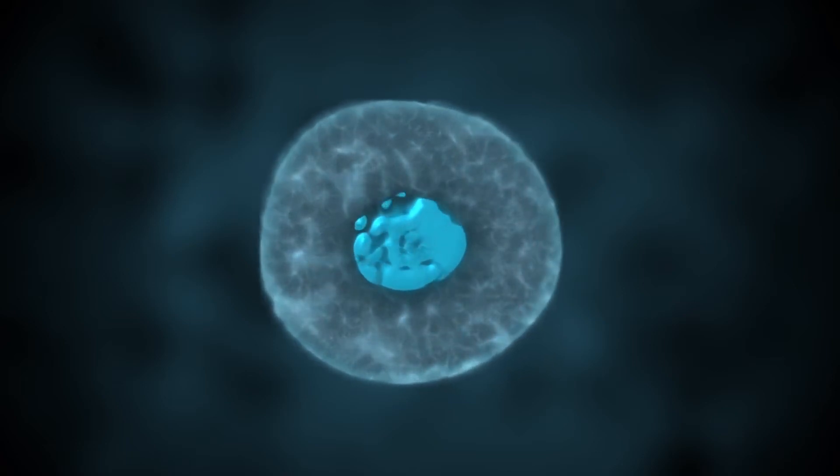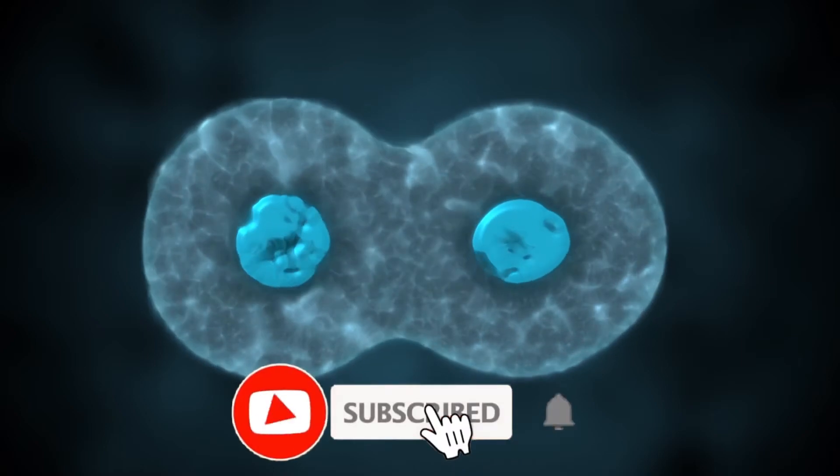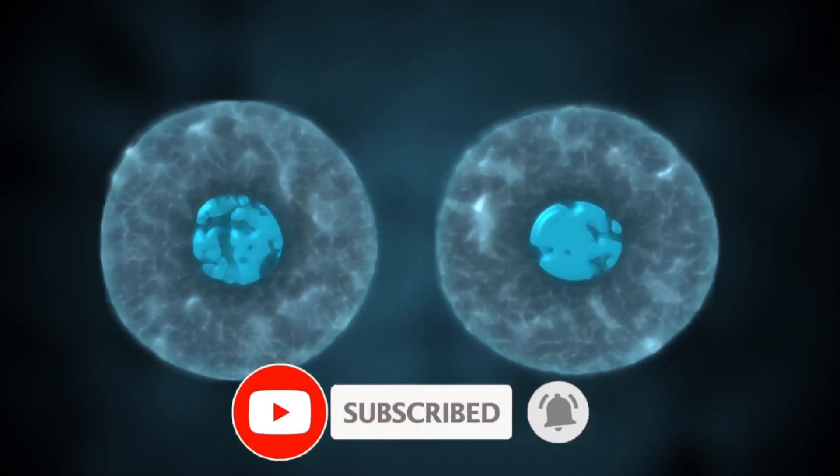Meiosis cleavage provides the formation of sex main cells. What makes this division special is that the number of chromosomes in gamete formation is halved.